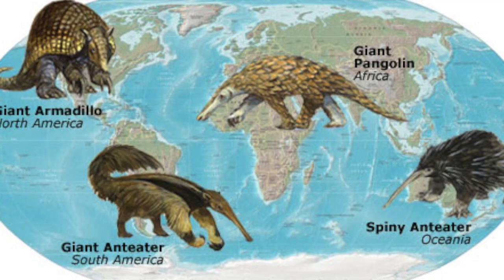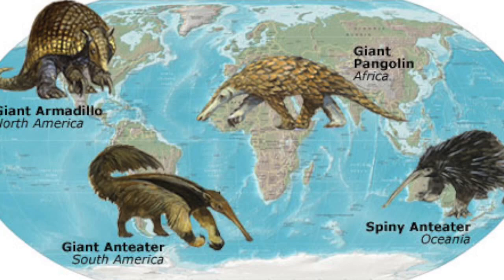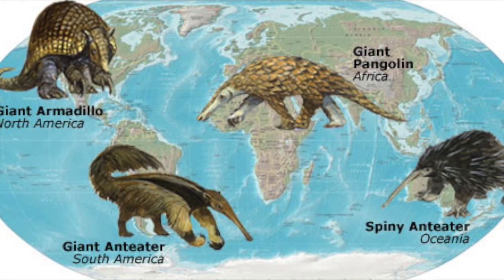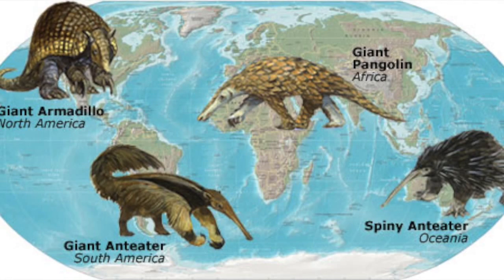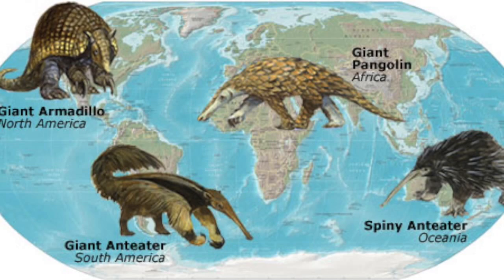The fourth zone is the Ethiopian, covering Africa, the southern part of the Caribbean, Madagascar, and other islands off the coast of Africa. Examples of animals found here are the African elephant, the rhinoceros, the lion, chimpanzee, and gorilla.